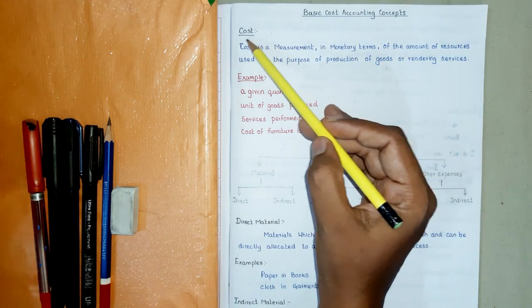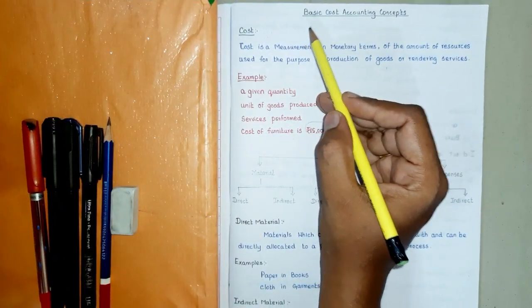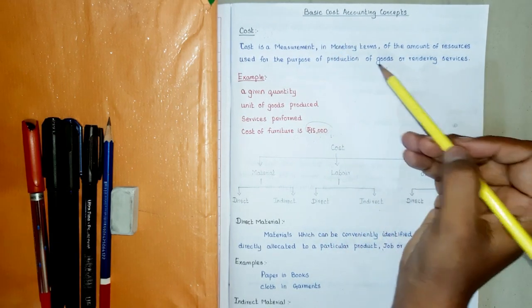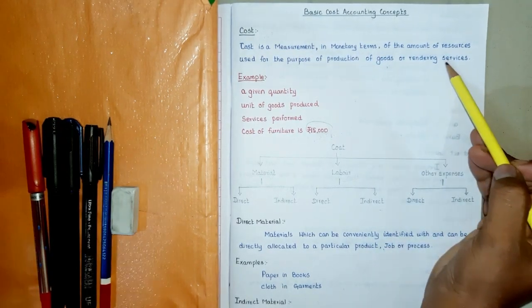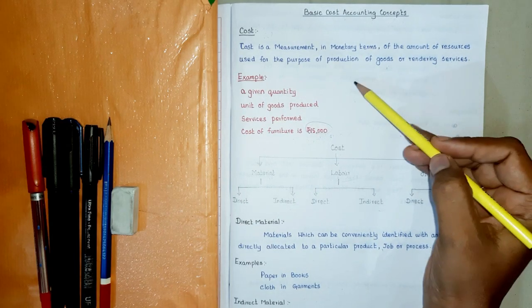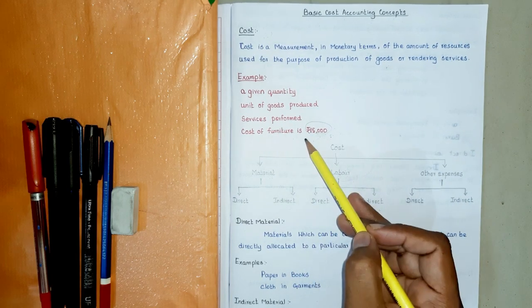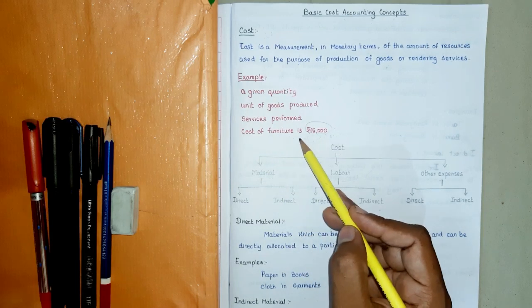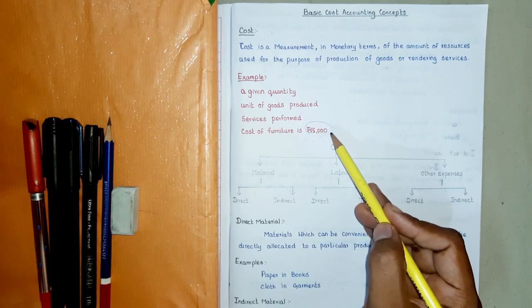With this introduction, we shall now proceed with the basic cost accounting concepts. The first and foremost concept is cost. Cost means the amount actually incurred in manufacturing a product or rendering a service. This is the meaning for the cost which can be used for exam purposes. These are the four examples prescribed here.